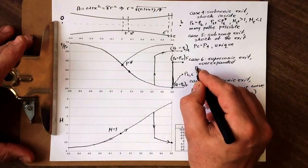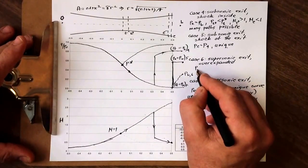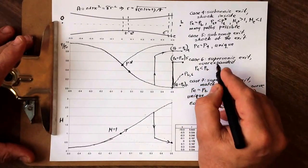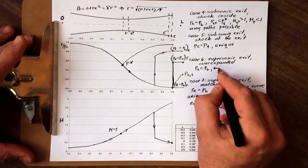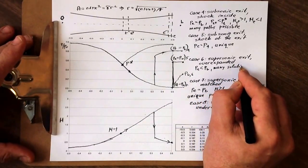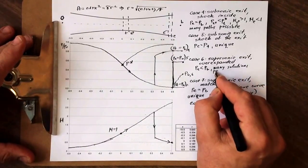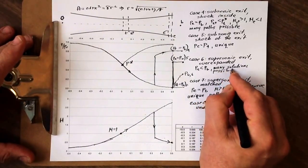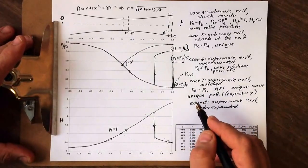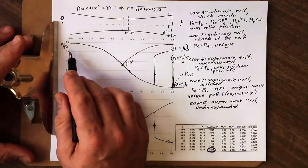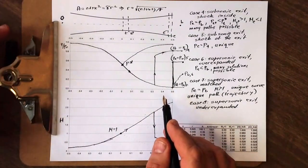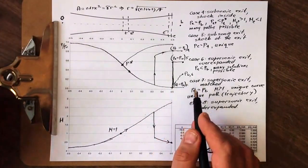So now we have PE is less than PB. Many solutions possible. And as far as the flow in the nozzle is concerned, this is isentropic flow. The increase of entropy happens afterwards.